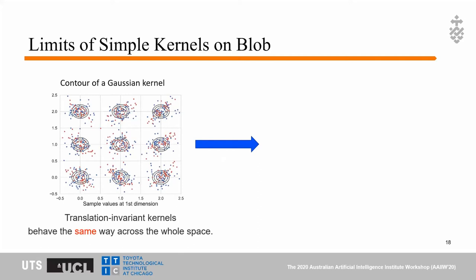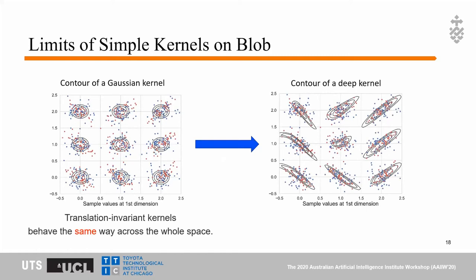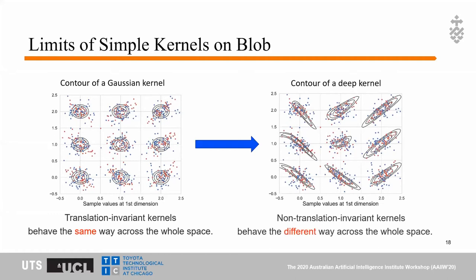In our work, we consider learning a deep kernel. The deep kernel can learn a space and learn contours that allow us to distinguish two samples better than a translation-invariant kernel. For non-translation-invariant kernels, they behave differently across the whole space, as illustrated in this image.